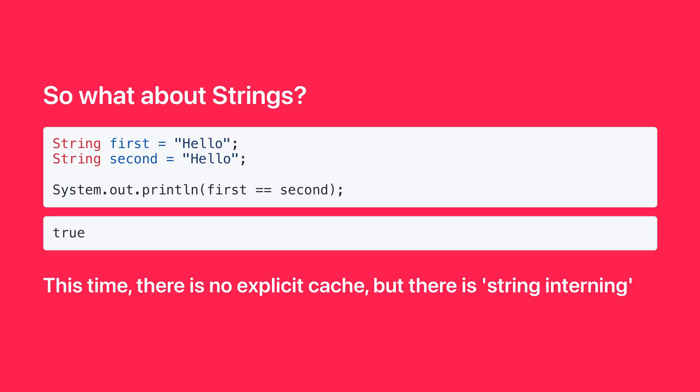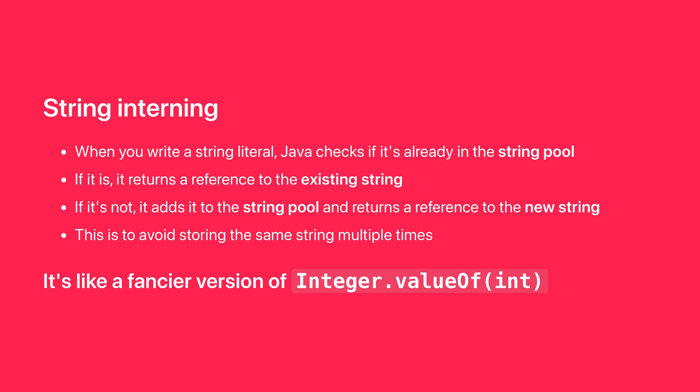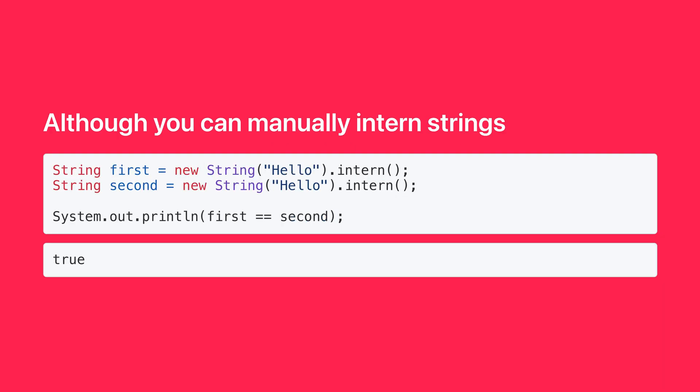So what about strings? This time there's no explicit cache like with Integer.valueOf, but Java has a special optimization for strings called string interning. Like with integers, if we create the strings manually we get false, because double equals compares references and the references are different. But when you write a string literal, Java checks if it's already in the string pool. If it is, it returns a reference to the existing string; if not, it adds it to the string pool and returns a reference to the new string. This is to avoid storing the same string multiple times. It's like a fancier version of integer caching, but this only works at compile time. You can manually intern strings at runtime, but it's not something you'd do every day.